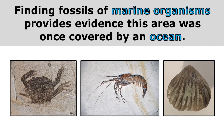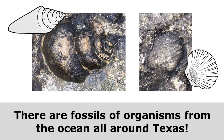Finding fossils of marine organisms provides evidence this area was once covered by an ocean. There are fossils of organisms from the ocean all around Texas, and that provides evidence that most of Texas was once covered by an ancient ocean.